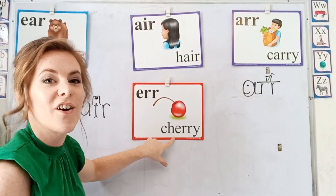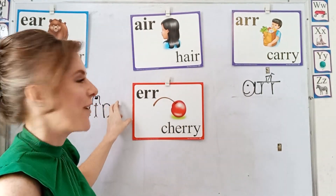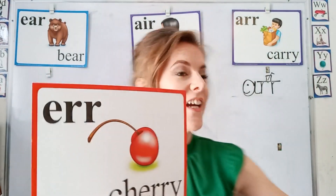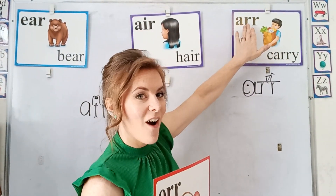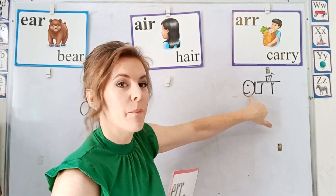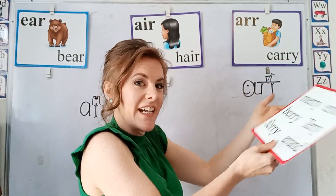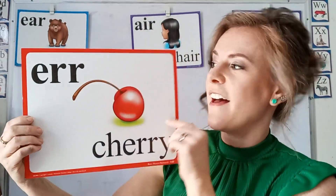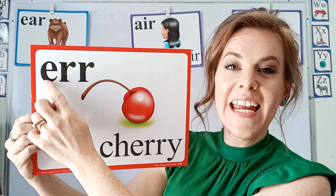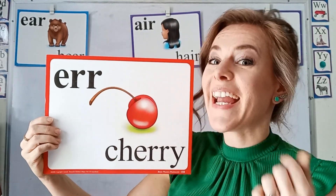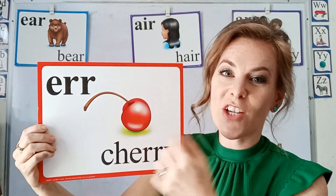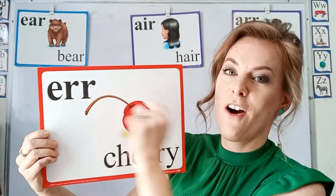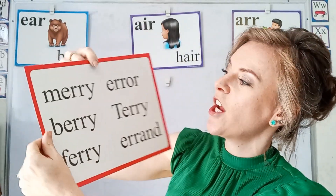And then here we have the 'air' in cherry. Which is E-R-R. Here it's A-R-R — that's why we have a person carrying something. And then we have E-R-R. This is the 'air' in cherry. And with the E, you want to eat the cherry — you want to E-E-Eat the cherry. So it's E-R-R. This is the 'air' in cherry.